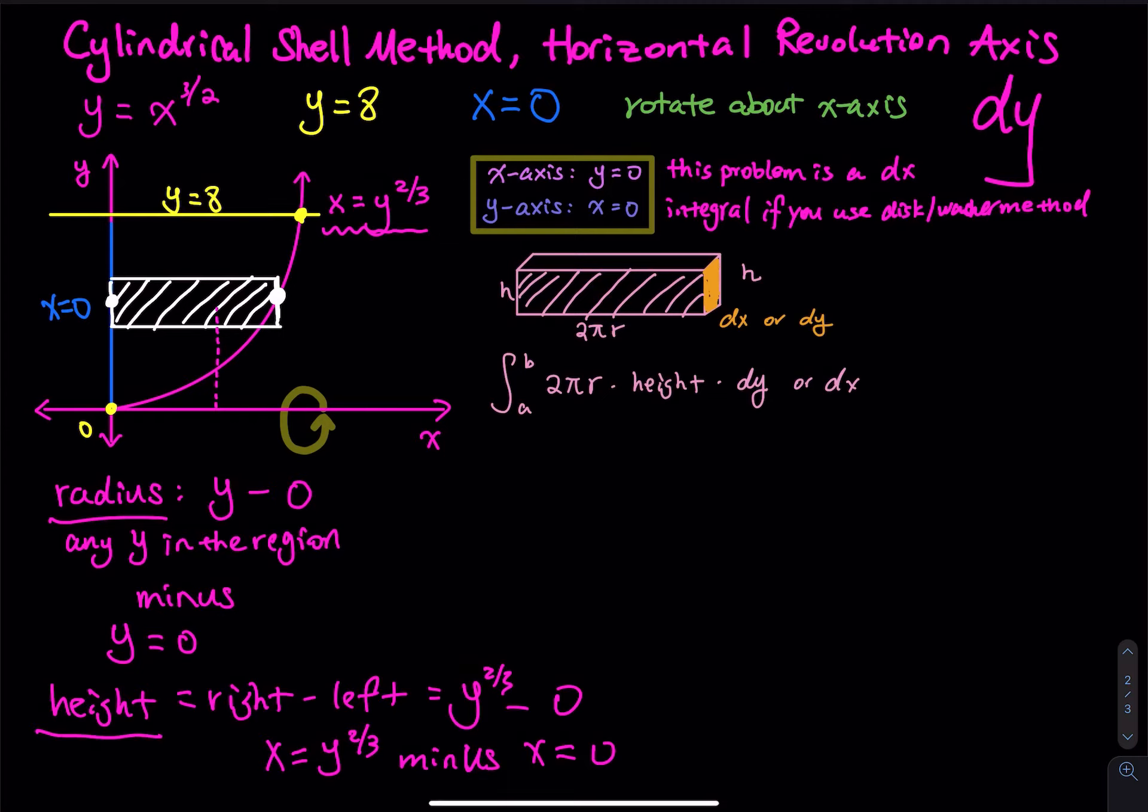We are ready to roll. So we have the volume equals, a is 0, right? So we have y equals 0 to y equals 8 and then 2π times the radius and then times the height (y^(2/3) - 0). And then this is a dy integral. So that is the integral that finds the volume using the shell method.